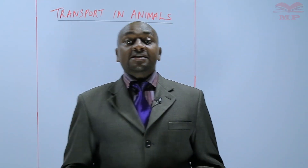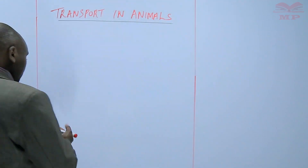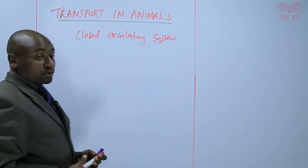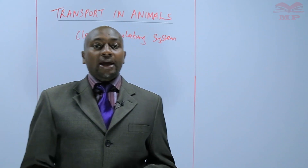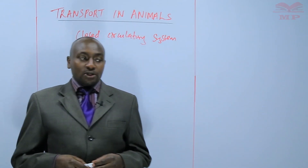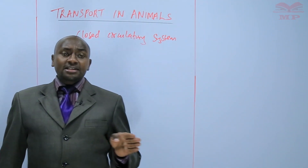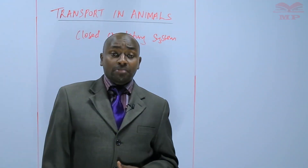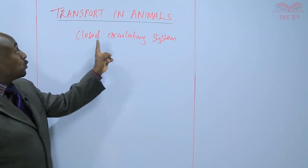Today we look at the second type of circulatory system, which is called the closed circulatory system. In a closed circulatory system, blood flows within closed blood vessels. Once the blood has been pumped by the heart, it gets into blood vessels which include the arteries, the veins, and the capillaries, and then eventually comes back to the heart — hence closed circulatory system.